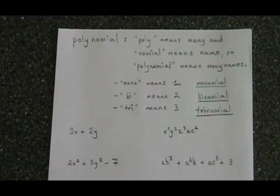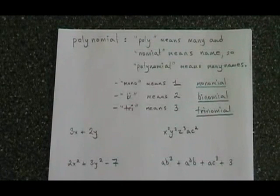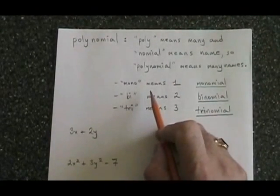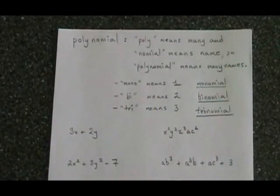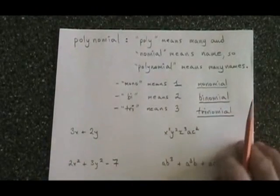We also have to know the meanings of the words mono, bi, and tri. Mono means one, as in monocle. So the word monomial must mean one name.